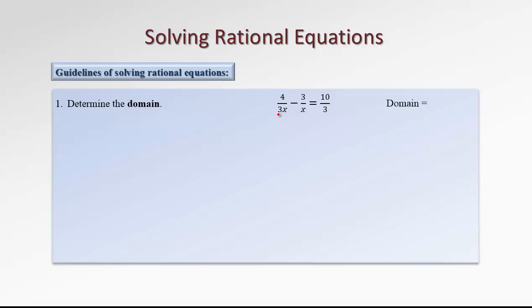Here's one example of a rational equation. Before we even start solving this equation, the very first step would be to determine the domain. The domain is the set of all possible x values that we can plug into any expression within this equation and be able to evaluate it. The numbers that will be impossible to evaluate are the ones that will make any of those denominators 0. That means x can't be 0, because both denominators would be 0.